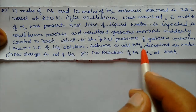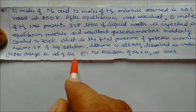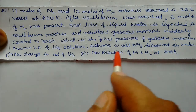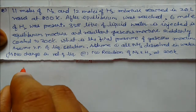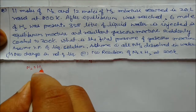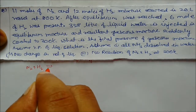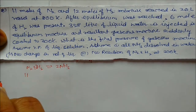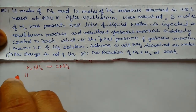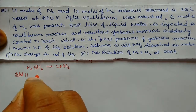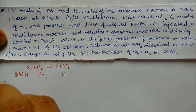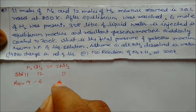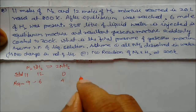Assume all ammonia dissolves in water, no change in volume of liquid, and no reaction of nitrogen and hydrogen at 300 Kelvin. The reaction is: N₂ + 3H₂ → 2NH₃. Initially, N₂ = 11 moles, H₂ = 12 moles, NH₃ = 0. At equilibrium: N₂ = 9 moles, H₂ = 6 moles, NH₃ = 4 moles.